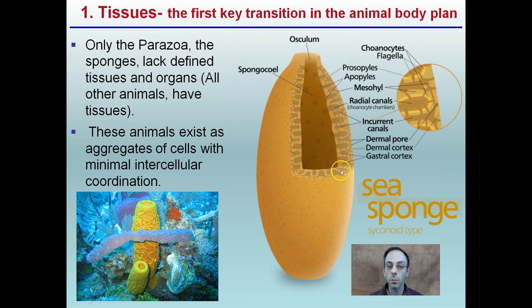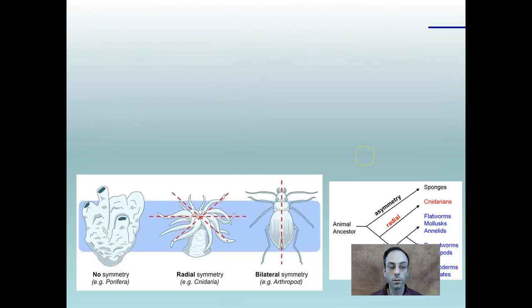They're organized to some degree, but there's minimal intercellular coordination, meaning there's minimal specialization within the cells. They're each performing essentially the same function — not getting very specialized — and this is key in the sea sponge.